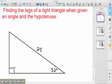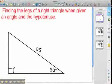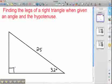Alright, we're going to find the legs of a right triangle when given an angle and the hypotenuse. So to start out with here, I've got a 32 degree angle on the bottom, right there, one of the acute angles. I've got a 90 degree angle and my hypotenuse is 25.